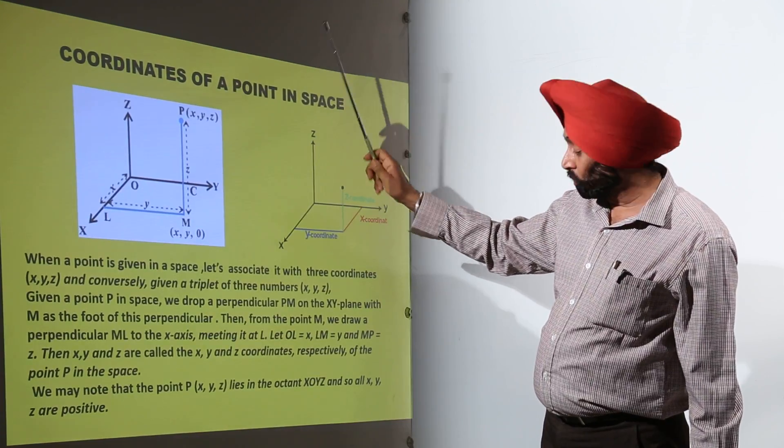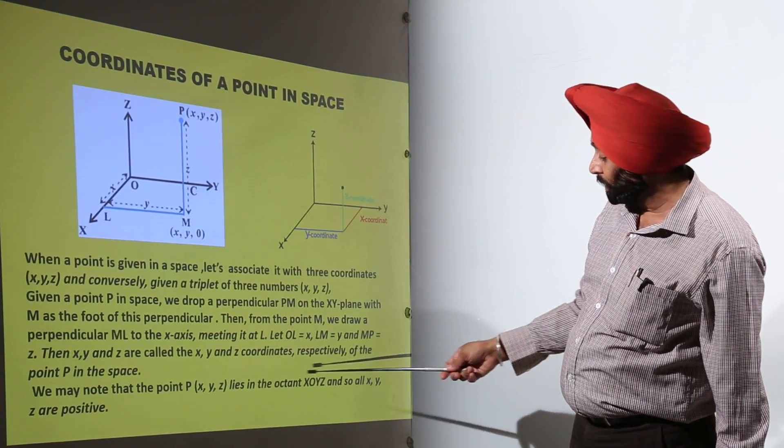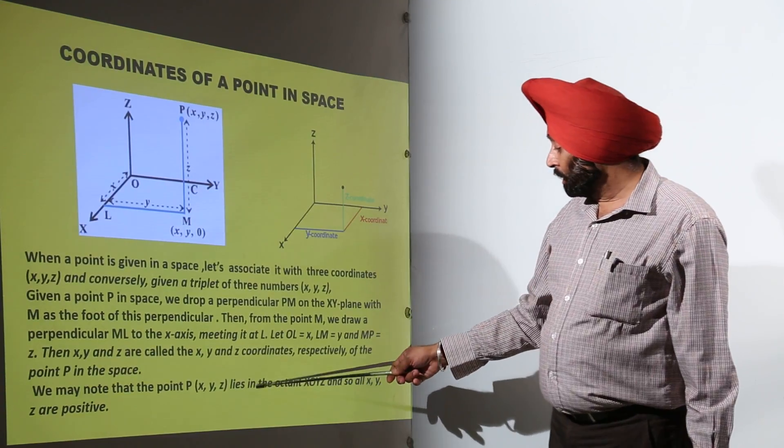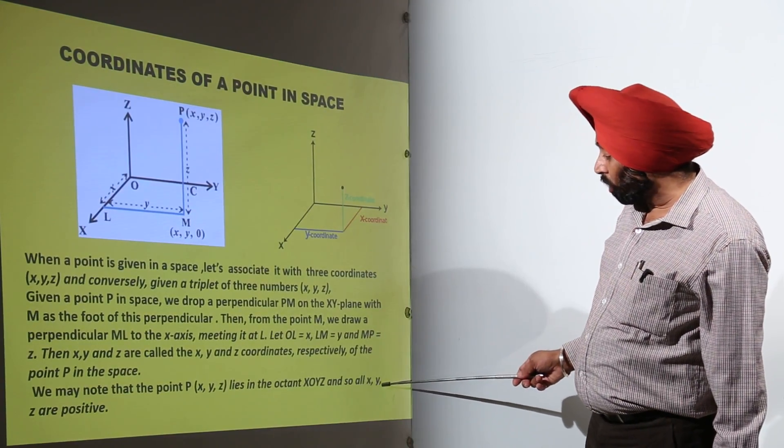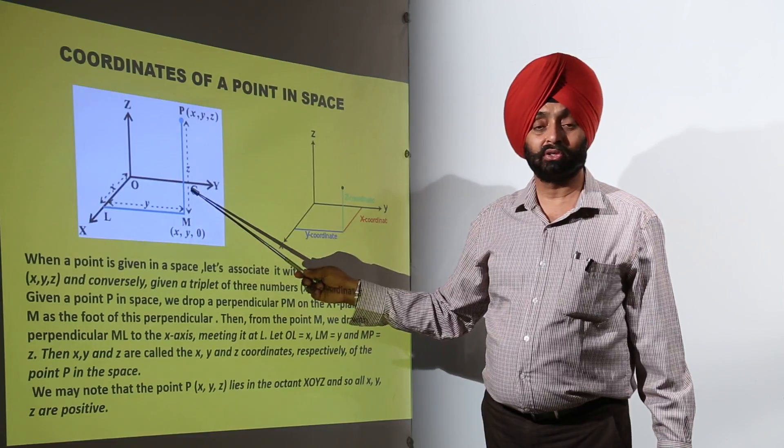So all are positive, it means they are in the first quadrant. And first quadrant is what? Basically it is X, Y, and Z. In the octant XOYZ, so all X, Y, and Z are positive.